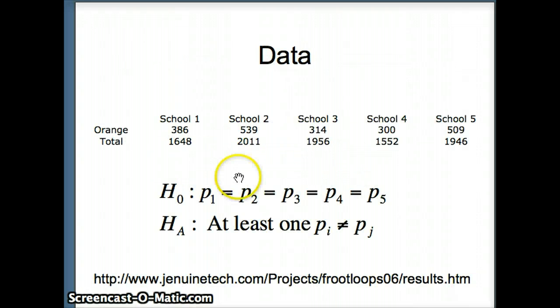Here's our data. School 1 had 386 orange pieces out of 1,648. School 2 had 539 pieces out of 2,011, etc. There are five schools for us to compare.